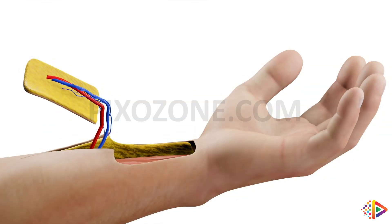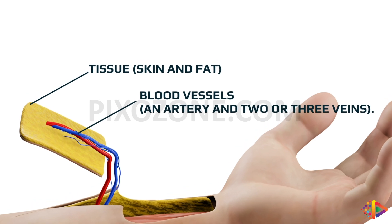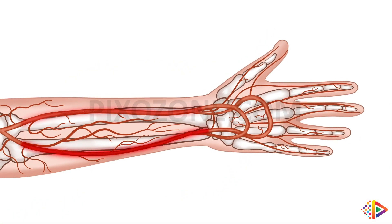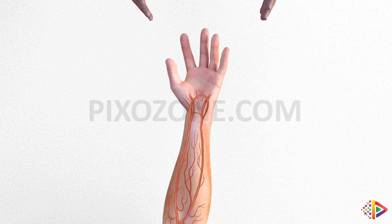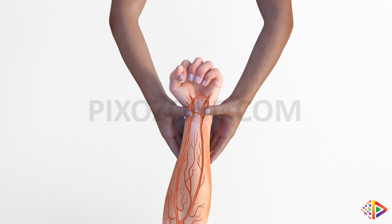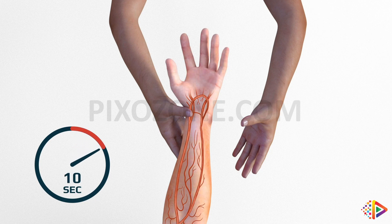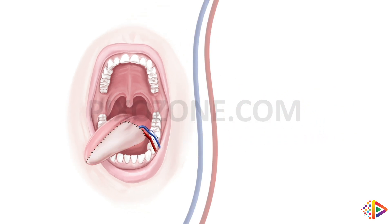This involves taking tissue — skin and fat — from near the wrist, along with blood vessels: an artery and two or three veins. We can do this safely because the forearm is supplied by two arteries, the ulnar artery and the radial artery. Before we perform the surgery, we will perform a test called an Allen's test to make sure there will be enough blood supply to the hand from the ulnar artery if the radial artery is taken. We will only perform the operation if this is safe to do so.